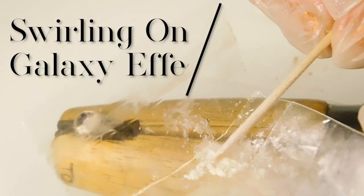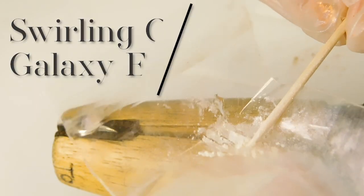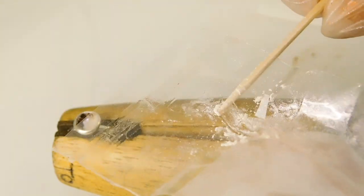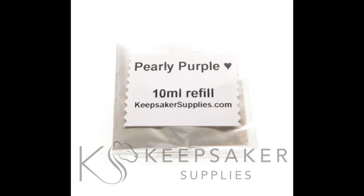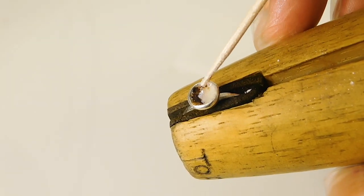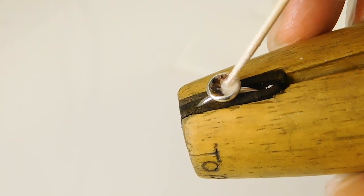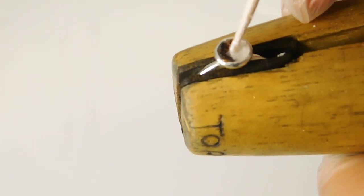Swirling on a galaxy effect. Clients absolutely love a galaxy effect, so I'm adding some of the pearly breast milk sparkle mix which comes in the kits. Add a little bit of resin, then take the tiniest bit of the pearly sparkles on a toothpick.